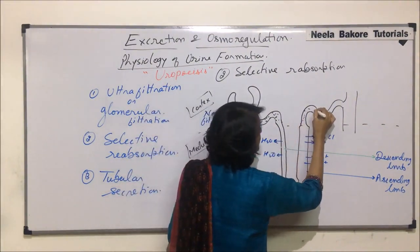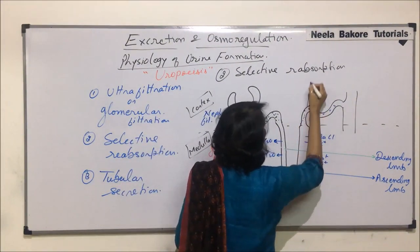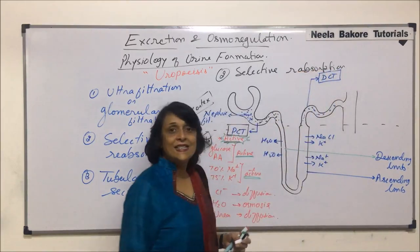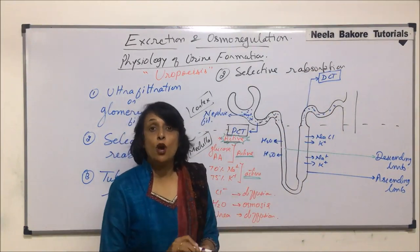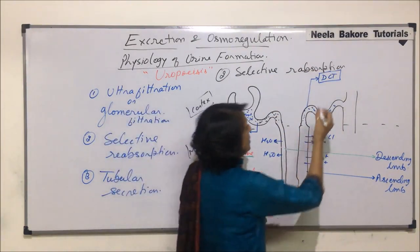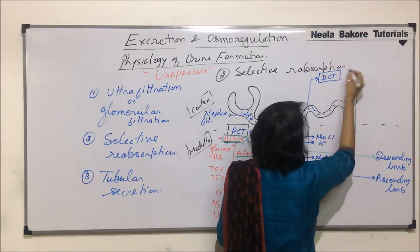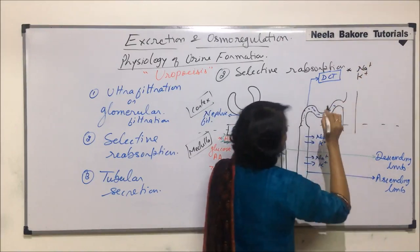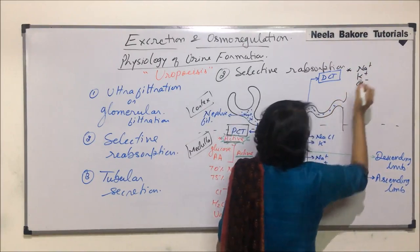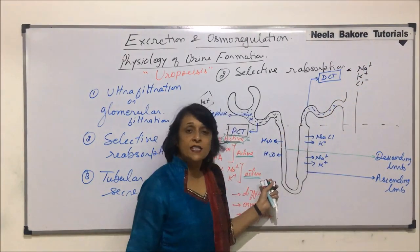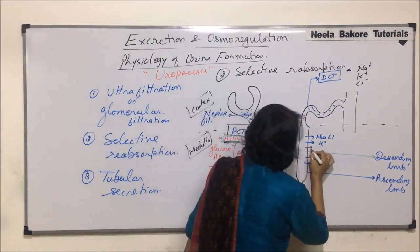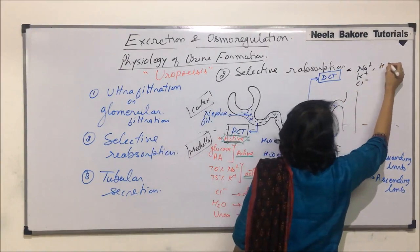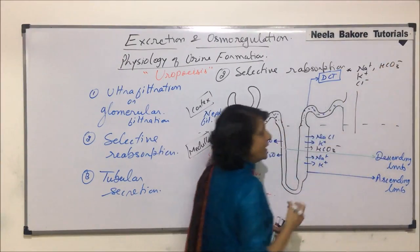This filtrate then comes into the distal convoluted tubule — DCT. In DCT, again there is absorption of ions: mainly sodium ions, potassium ions, and chloride ions. And in all these places, even bicarbonate ions are also absorbed.